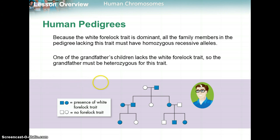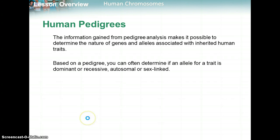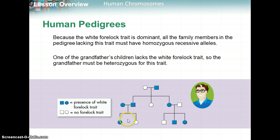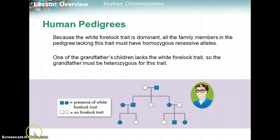Because the white forelock trait is dominant, all family members lacking this trait must be homozygous recessive — grandma, the first daughter, and the man she married must all be homozygous recessive. You can work backwards to figure out genotypes: if forelock is F, the first daughter is little f, little f, so her father must be big F, little f — heterozygous. The grandfather also has to be heterozygous, because he had a daughter who is homozygous recessive, meaning he had to pass on a recessive allele. There are fun little puzzles you can do with pedigrees like this.